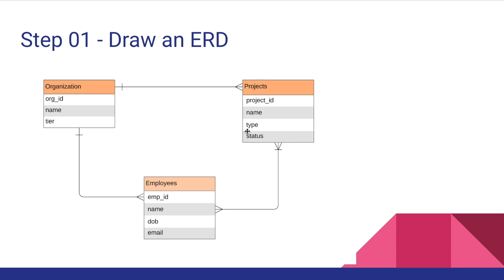Then we have projects. There's a project ID to uniquely identify a project, a name, and a type. There are two types of projects: agile projects and fixed bid projects. There's also a status field, mainly used to indicate if a project is on hold.